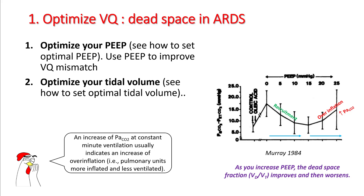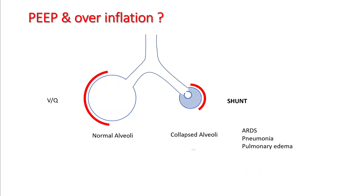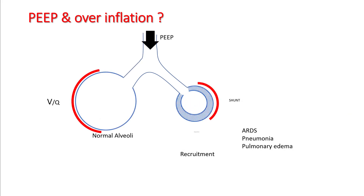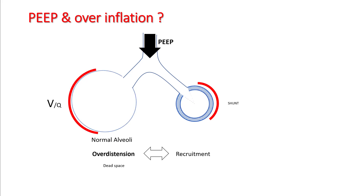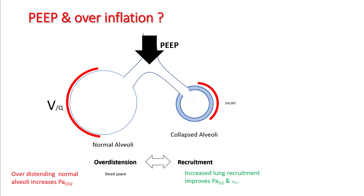You can watch how to optimize PEEP and tidal volumes in my previous lectures. As you increase PEEP, you cause more recruitment; however, you are also increasing the ventilation-perfusion ratio of normal alveoli, causing some degree of distension. As you continue to increase PEEP, you can go into more over-distension and worsening of VQ mismatch in the normal alveoli. Over-distending normal alveoli will increase PaCO2, while recruitment should increase PaO2.